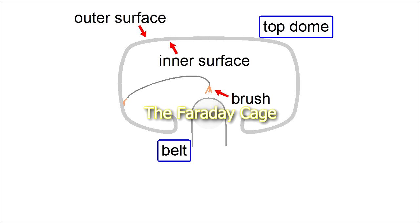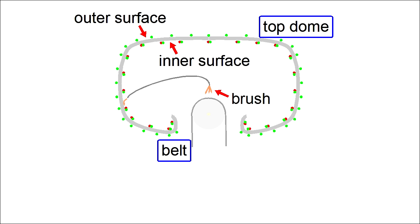Perhaps the most important thing that makes a Van de Graaff Generator work is the use of the Faraday Cage, or Faraday Ice Pail Effect. That says that if the dome of a Van de Graaff Generator is charged, then the positive or negative charge exists only on the outside of the dome. The inside remains neutral.